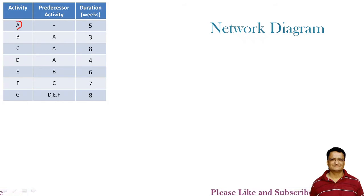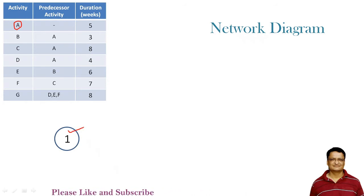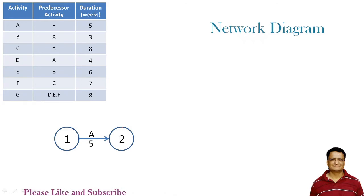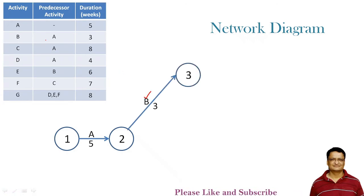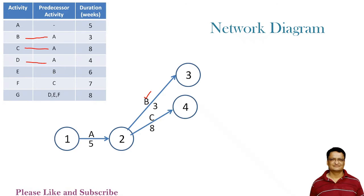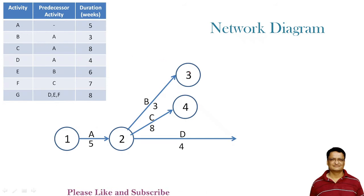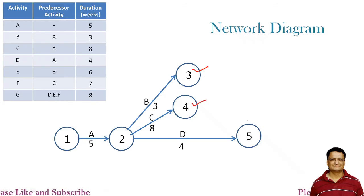The first activity is activity A, which starts from event 1. Since activity A has no precedence — it is the starting activity — it emerges from event 1 and completes at event 2. From event 2, activities B, C, and D will emerge because all three are dependent on A. So there will be three activities coming out of event 2. These lead to event number 3, event number 4, and event number 5.